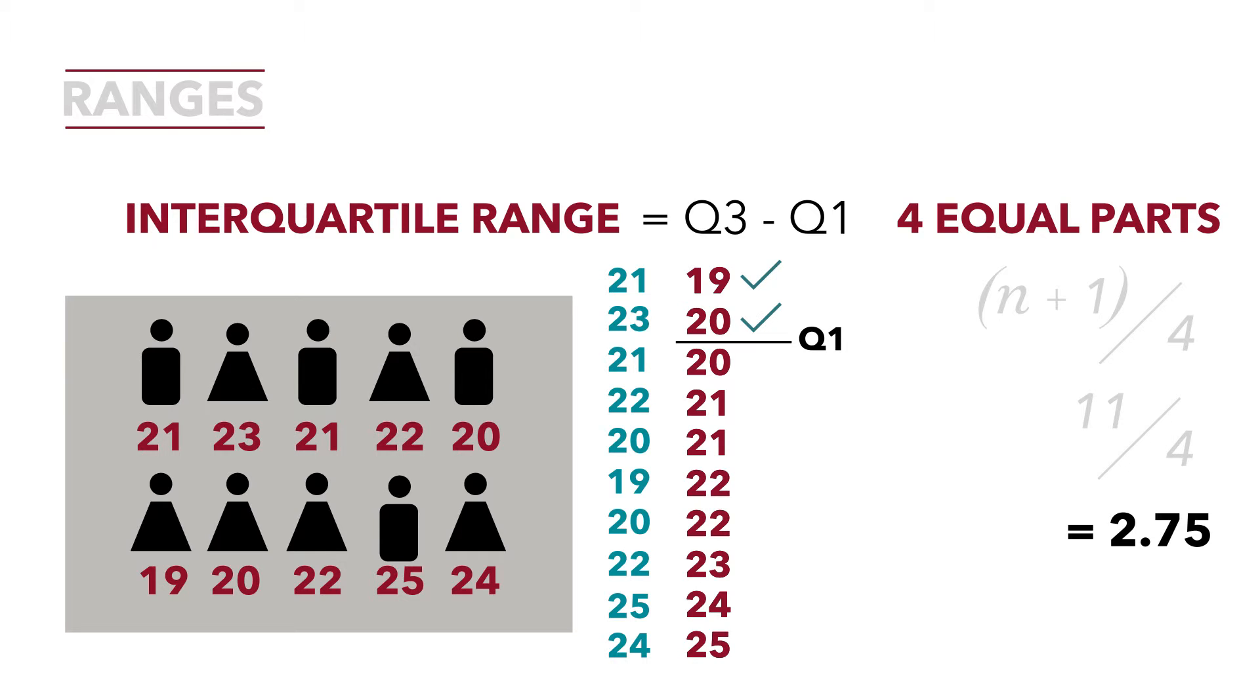We're going to count another 2.75. In fact, 2.75 plus 2.75 is 5.5, so that's between observations 5 and 6. There's Q2. And if you recall, these are the same data we used to calculate the median, and that was the point that we calculated for the median.